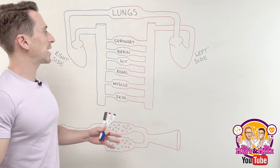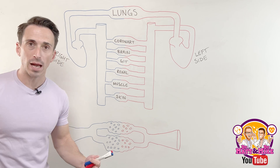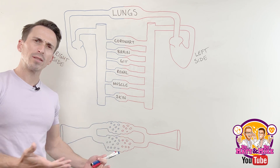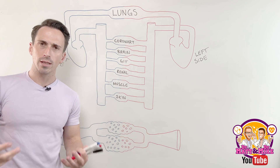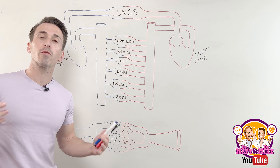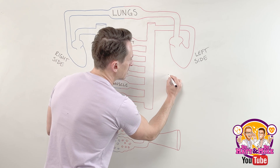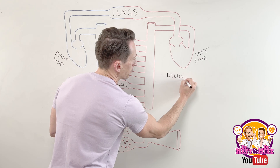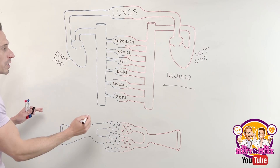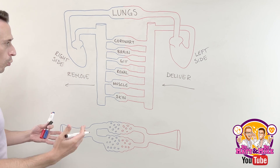To begin with, we need to understand that we have a circulatory system which is carrying blood around the body, delivering this blood to the tissues and also taking this blood away from the tissues of the body. The question we need to ask ourselves is why. Well, there are a couple of reasons why we have a circulation. The first reason is that it needs to deliver stuff. The other reason is that it needs to remove stuff.